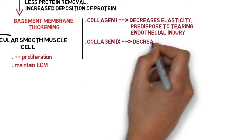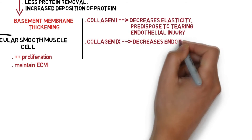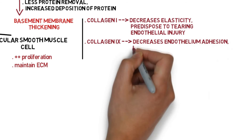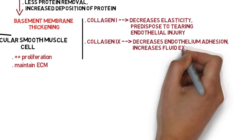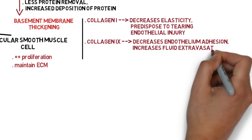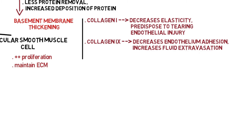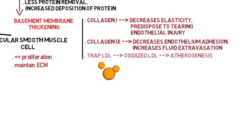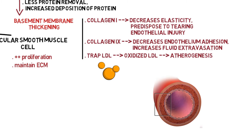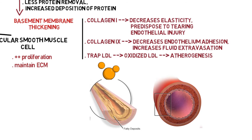If AGEs cross-link with collagen type 4 in the basement membrane of the endothelium, it leads to decreased endothelial cell adhesion and increased fluid extravasation. Abnormal thickening of the basement membrane causes LDL molecules to become trapped between the intimal layer of the vessel wall, where they are soon oxidized by free radicals, accelerating atherogenesis.